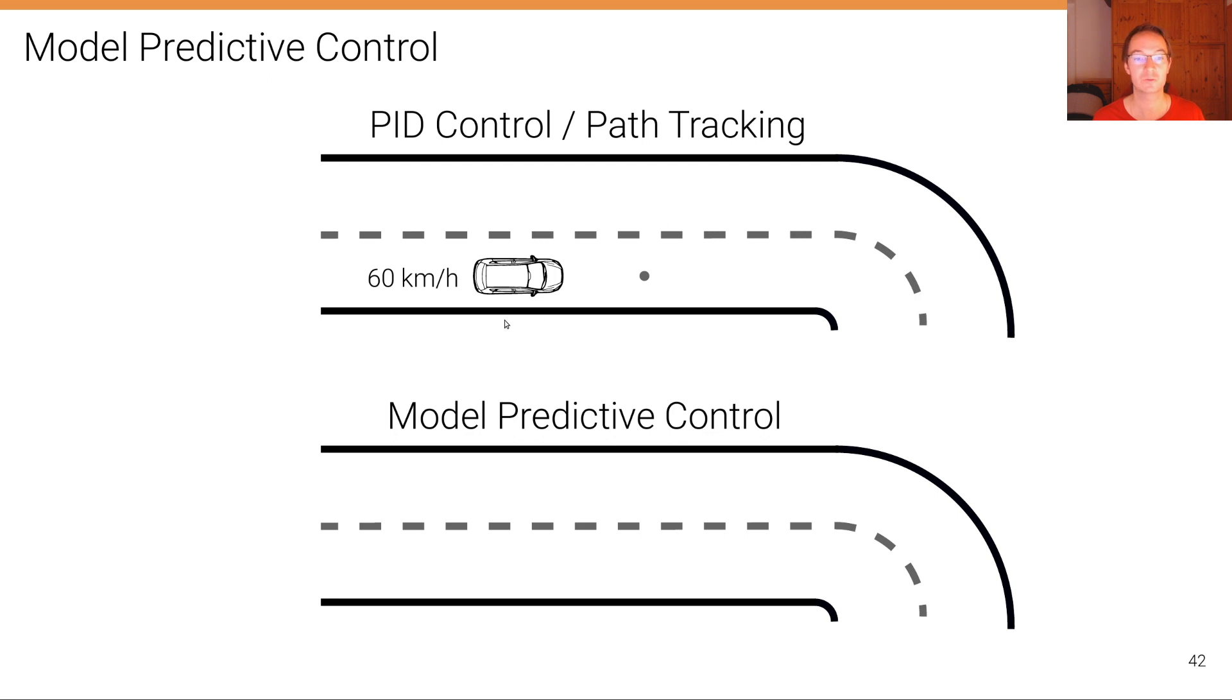So we go at 60 kilometers per hour now. Because we're still going straight and we're just looking locally at our environment, we accelerate further to 70 kilometers per hour.